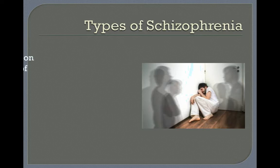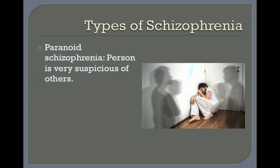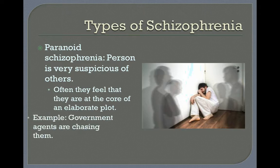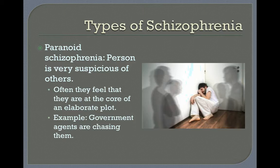Paranoid Schizophrenia is when a person is very suspicious of others. This is different from paranoid personality — this is a form of schizophrenia. Often they feel that they are at the core of an elaborate plot. For example, government agents are chasing them.